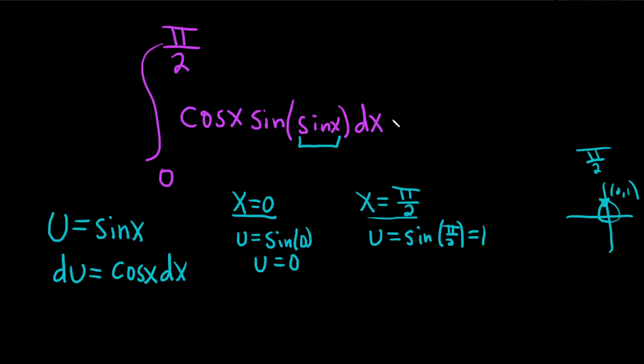Okay, so now we can make our substitution. So we have our limits being changed. Instead of x equals 0, it's u equals 0. Instead of x equals pi over 2, it's going to be u equals 1. And then this piece here, this cosine x dx, that's over here, that's just du. So we're left with the sine of the sine of x. Well, that's just going to be the sine of u.